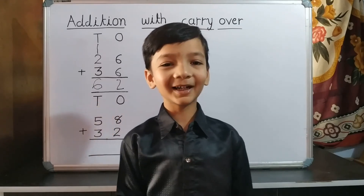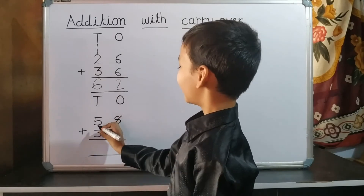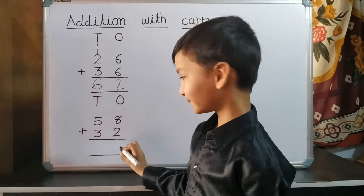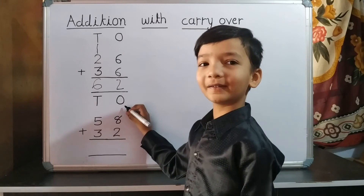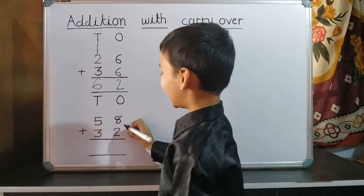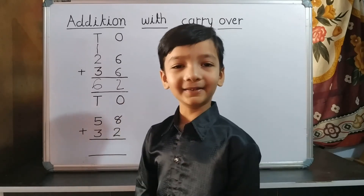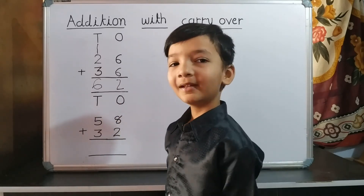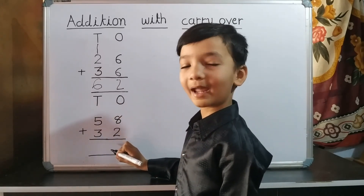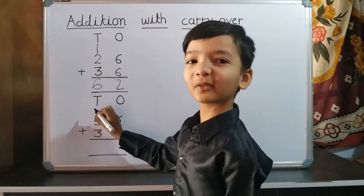Another sum. 58 plus 32. First we do addition of one's place. 8 plus 2 equals 10. So we write 0 on one's place and 1 carryover to ten's place.